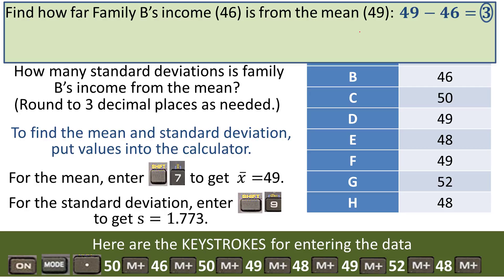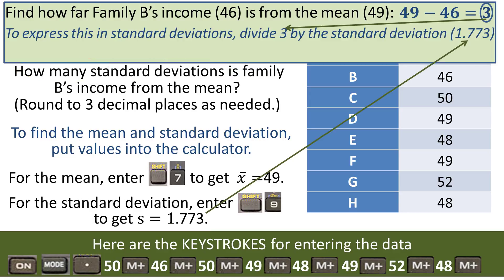But they also ask us to measure this in standard deviations. How many standard deviations is that? One standard deviation is 1.773. So to find how many standard deviations away from the mean it is, you simply divide the difference by the standard deviation.